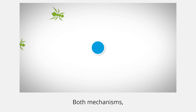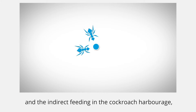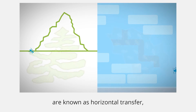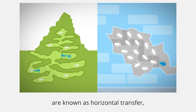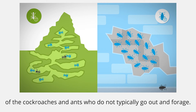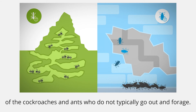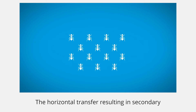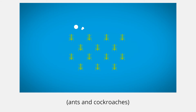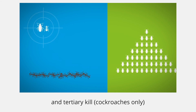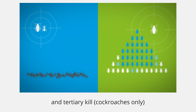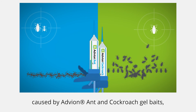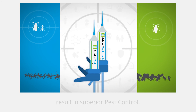Both mechanisms — the active feeding of the ants and the indirect feeding in the cockroach harbourage — are known as horizontal transfer, resulting in secondary kill of the cockroaches and ants who do not typically go out and forage. The horizontal transfer, resulting in secondary and tertiary kill, caused by Adveant ant and cockroach gel baits, results in superior pest control.